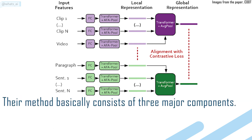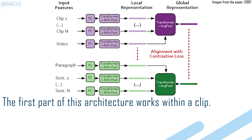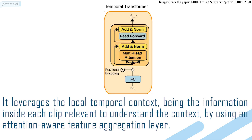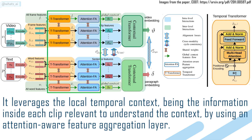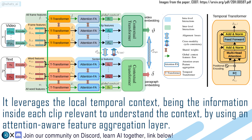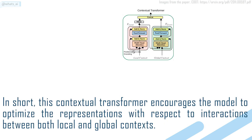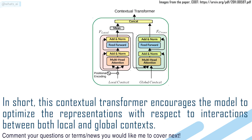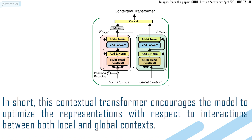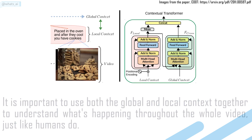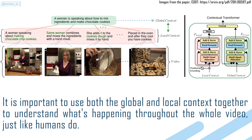Their method basically consists of three major components. The first part of this architecture works within a clip — it leverages the local temporal context, being the information inside each clip relevant to understanding the context, by using an attention-aware feature aggregation layer. Then there's a contextual transformer that learns how each clip, sentence, and paragraph interact together to produce the final video or paragraph representations. This contextual transformer encourages the model to optimize representations with respect to interactions between both local and global contexts. It is important to use both global and local contexts together to understand what's happening throughout the whole video, just like humans do.